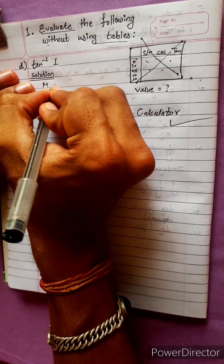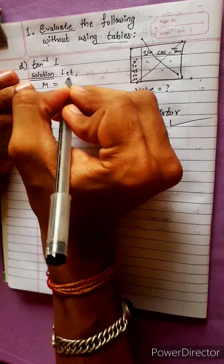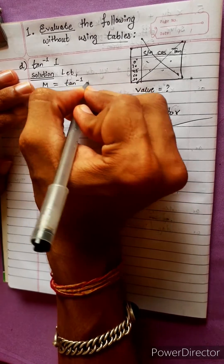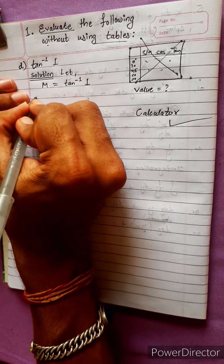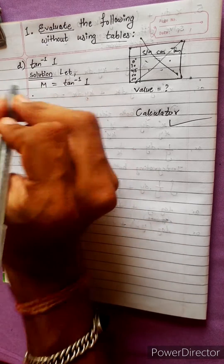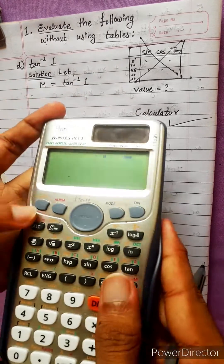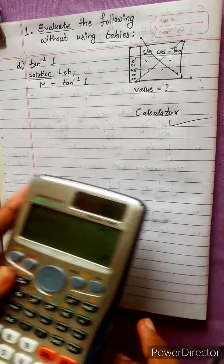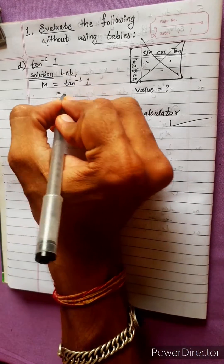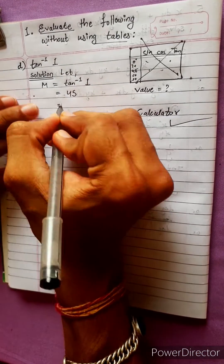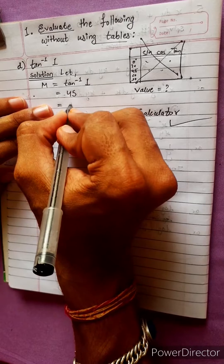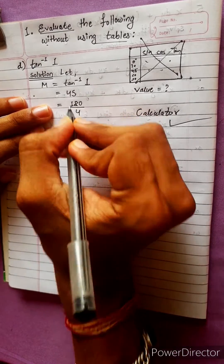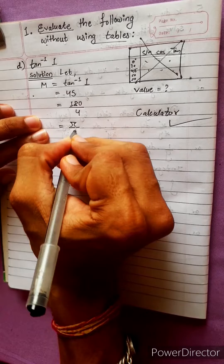Let M equal to tan⁻¹(1). Using the calculator directly: tan⁻¹(1) equals 45°. This 45° means 180 divided by 4, which we can write as π/4.